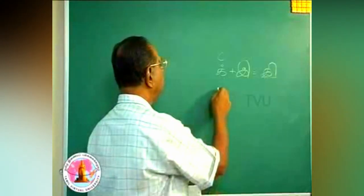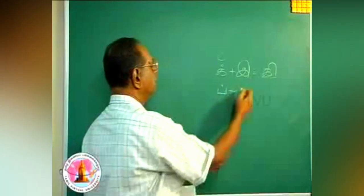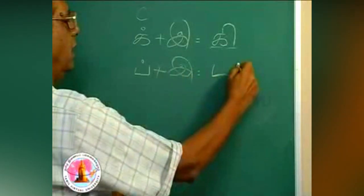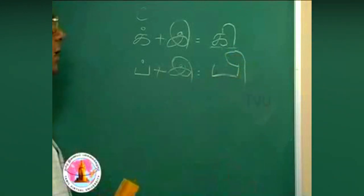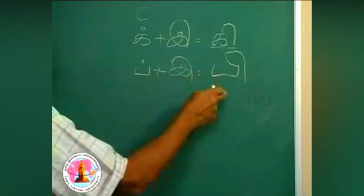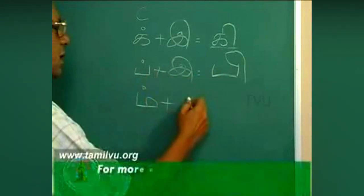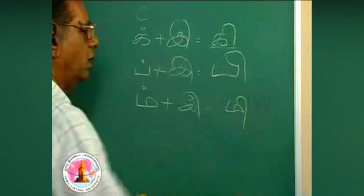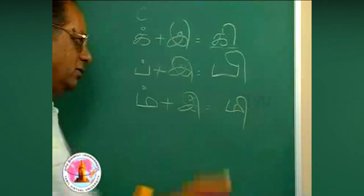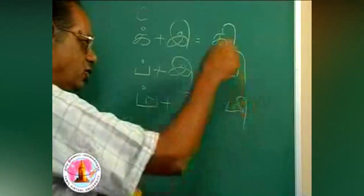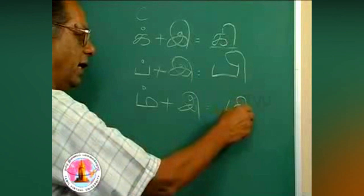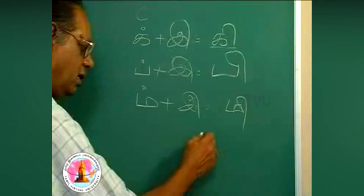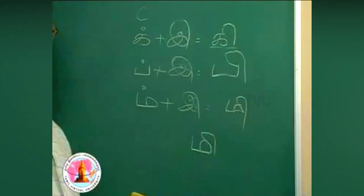After, now you have pa. P plus i, this becomes pi. See, I take the curve from the right end. M plus i is mi. Here you have to notice, as you don't have any right edge, you have to start on the very letter, in the middle of the letter. That is, ma. And in the middle of the letter, you take this marker and extend it. This is mi.